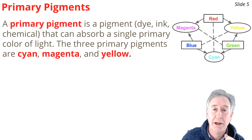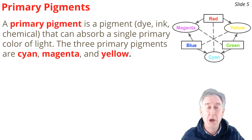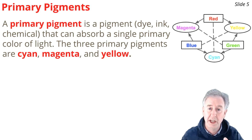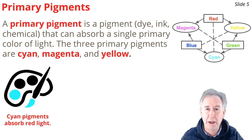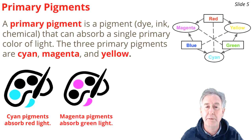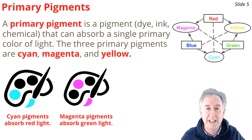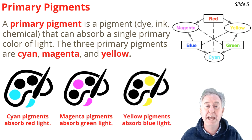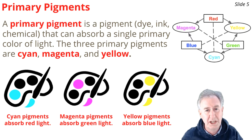We've been using this color schematic quite a bit. It works for light, but it also works for pigments. There are three primary pigments you need to know: cyan, magenta, and yellow — shown in the ovals on the schematic diagram. These primary pigments are called primary pigments because they each absorb one single primary color of light. Cyan absorbs red light. Magenta absorbs green light. Yellow absorbs blue light. You find each one on the color wheel, and it absorbs the color of light directly across from it.